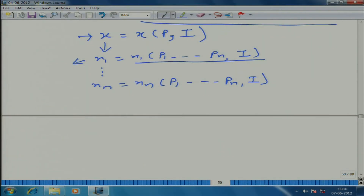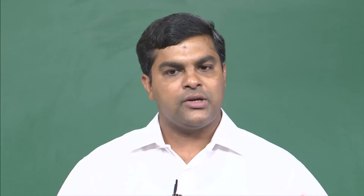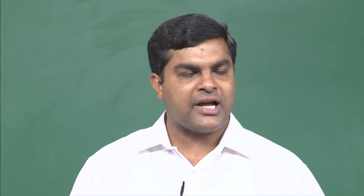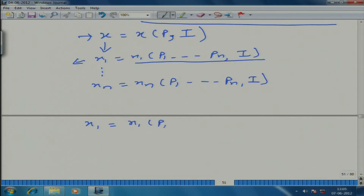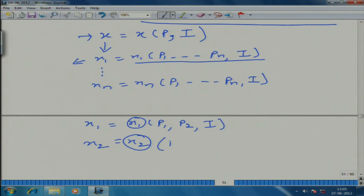What we are going to do — whatever we are discussing is true for an n-dimensional world or a world populated with n different goods — but I am going to describe a world which has only 2 goods. Here, x1 is a function of p1, p2, and i, and x2 is again — not necessarily the same function — a function of p1, p2, and i.